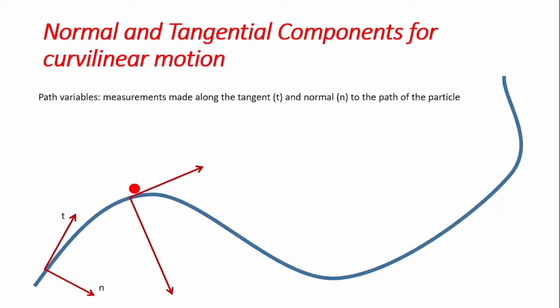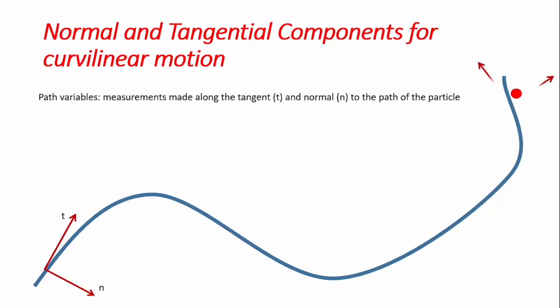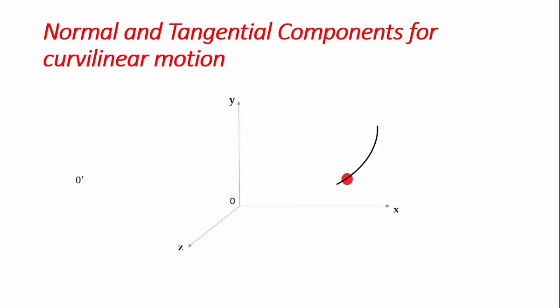As the particle moves to another point in the curve path, we get another set of coordinates tangential and normal to the path. As the particle keeps moving, we have new coordinates, and from these we can do analysis to find the acceleration that is normal to the path and the acceleration that is tangential to the path at every point in time. We're going to see relations that help us determine the tangential acceleration and the acceleration normal to the path.